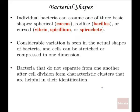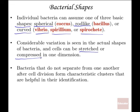Bacterial shapes essentially fall into one of three categories: spheres, rods, and curved. All spheres are called cocci; rod-like shapes are called bacilli or bacillus; and curved shapes are called vibrio, spirillum, or spirochetes. Within those three basic shapes there is considerable variation, and cells can be stretched or compressed when visualized.